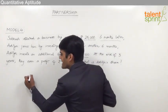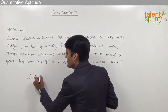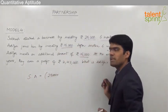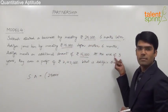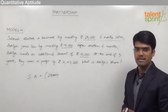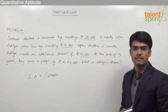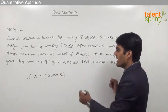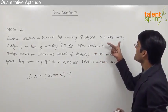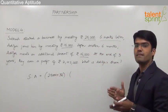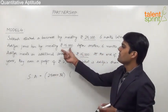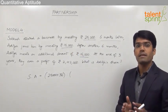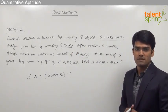The ratio of profit of Subhash to profit of Aditya equals investment multiplied by time. For Subhash: 25,000 into 36 months, because Subhash started the business and was never absent — he was present for all three years, which is 36 months. For Aditya, he joined six months later, meaning he was not present for the first six months, and he invested rupees 15,000. So this investment of 15,000 was in the business for the remaining 30 months.